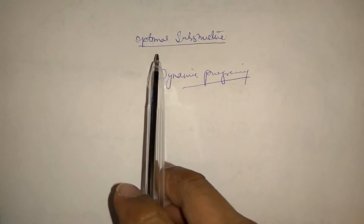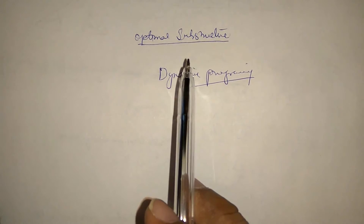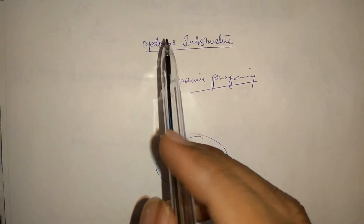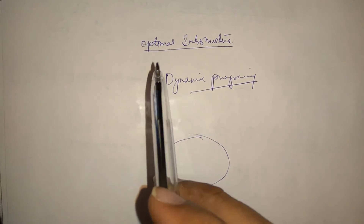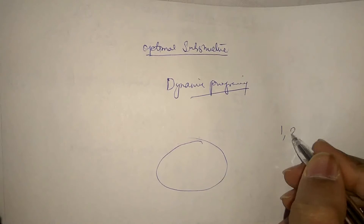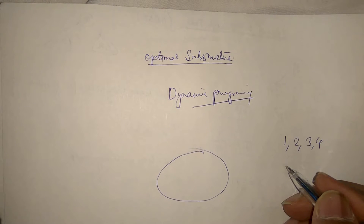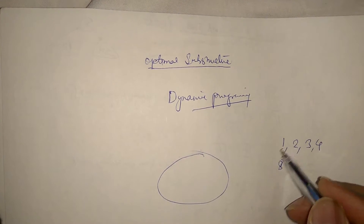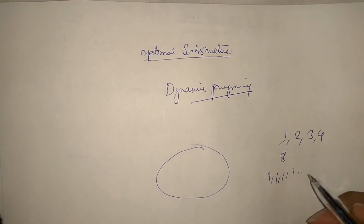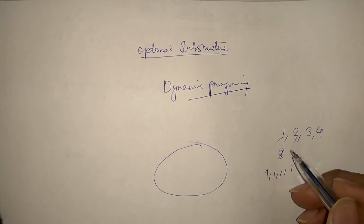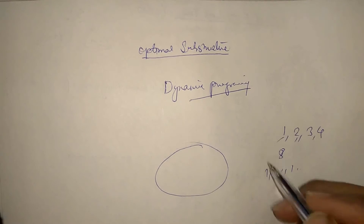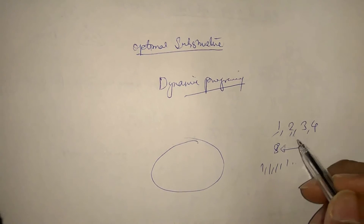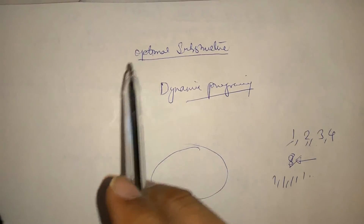So what is optimal substructure? Optimal substructure means that the optimal solution to a bigger problem is based on optimal solutions of its sub-problems. What do we mean by optimal? Either it is maximum or minimum — there are many possible solutions. For example, if you have coins of 1, 2, 3, and 4, and you need to find which coins are used to make a sum of 8, there are many solutions: eight 1-coins, two 4-coins, or 3+3+2, and so on. The optimal solution is either the minimum or maximum number of coins used to make 8.